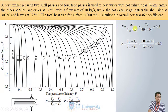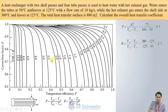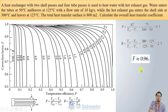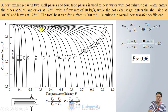From the values of P = 0.3 and R = 2.3, we use the correction factor chart for two shell passes and four tube passes. On the chart, P = 0.3 corresponds to a point along the x-axis, and the R = 2.3 curve intersects that point in a region between 0.9 and 1. Reading off the chart, the correction factor F is approximately 0.96.